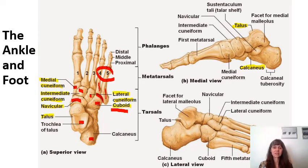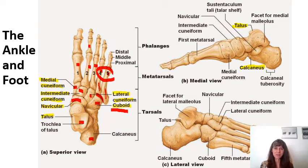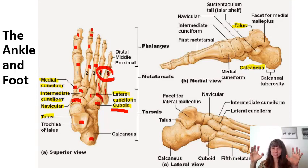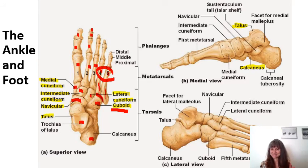The first through fifth metatarsals form the bulk of the arch and body of the foot. We have 14 phalanges in each foot, including in the second through fifth digits a proximal, middle, and distal phalanx, except for the hallux, which has only a proximal phalanx. There are 14 phalanges in each hand and 14 in each foot, for 28 per limb pair, totaling 56. Out of the 206 bones in the body, removing the phalanges leaves 150.